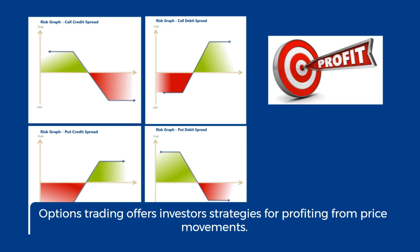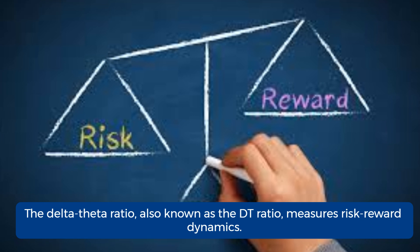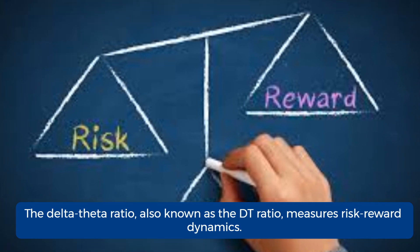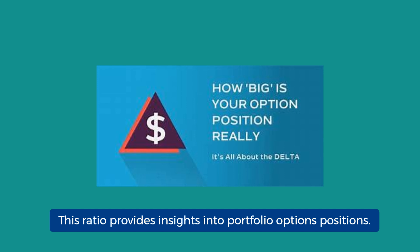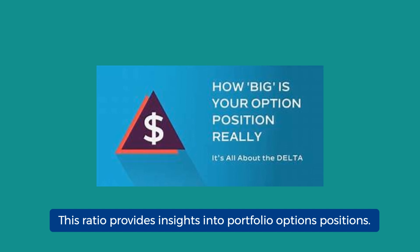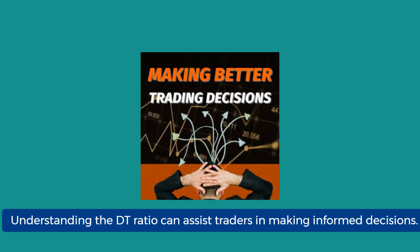Options trading offers investors strategies for profiting from price movements. Among the various Greek letters used in options, Delta and Theta are crucial. The Delta Theta ratio, also known as the DT ratio, measures risk-reward dynamics and provides insights into portfolio options positions. Understanding the DT ratio can assist traders in making informed decisions.